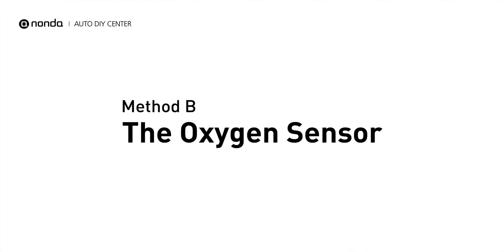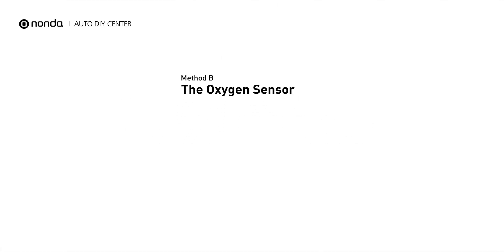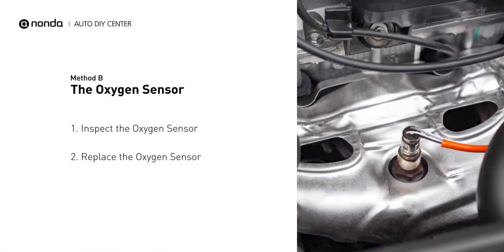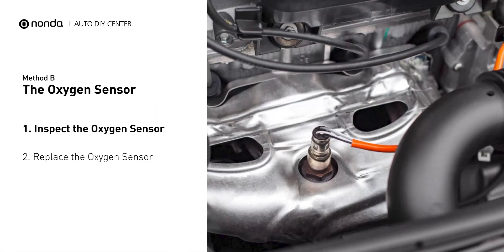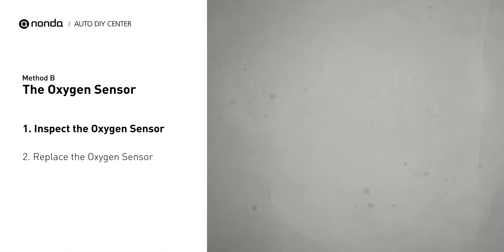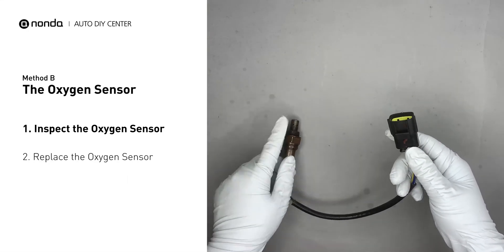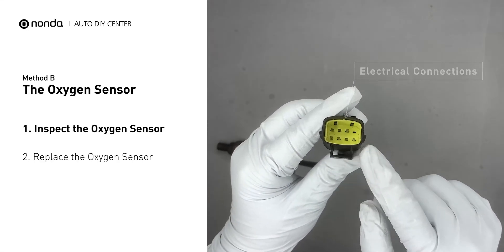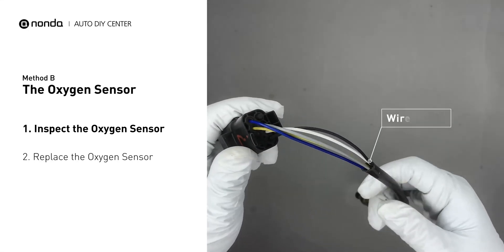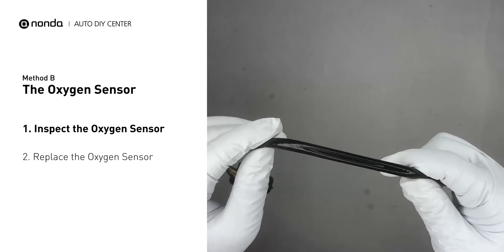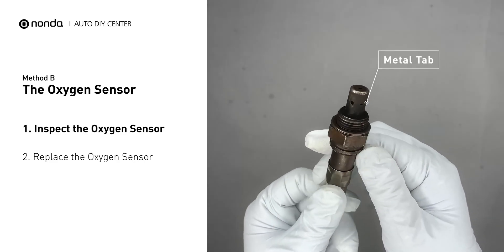Method B: the oxygen sensor. Oxygen sensors are mounted directly onto the exhaust pipe near the catalytic converter. Locate the sensor that responds too slow as it ages. Visually check the oxygen sensor's electrical connections, wire harness, and metal tabs for any damages.